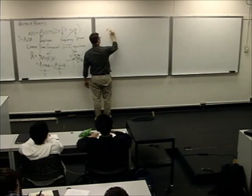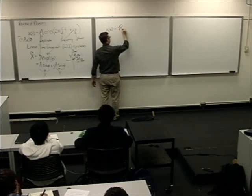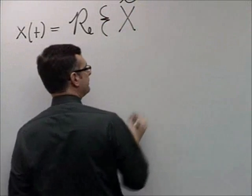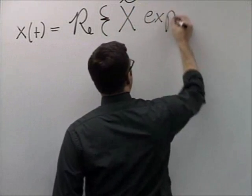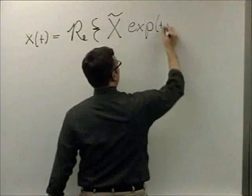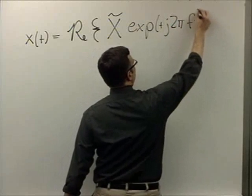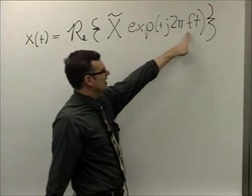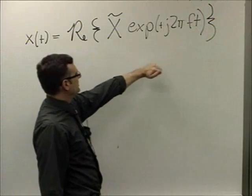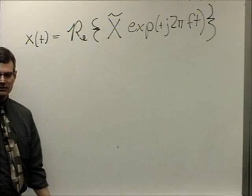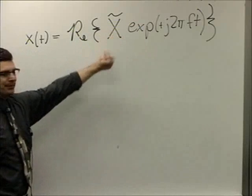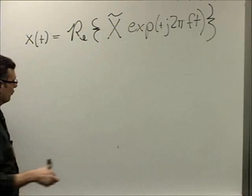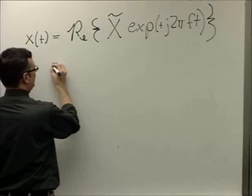X of t is equal to the real value of X tilde times EXP J 2 pi Ft. So this is how we get our frequency back in. This is the frequency that we were taking for granted. We just put that in a complex exponential, multiply it by our phasor, take the real value. You can do that for any complex value. And then what you get is something that's a function of time that you can literally measure with scope probes. Let's just calculate this out to verify that this is true.